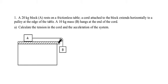A 20 kilogram block A rests on a frictionless table. A cord attached to the block extends horizontally to a pulley at the edge of the table. A 10 kilogram mass B hangs at the end of this cord. We want to calculate the tension in the cord and the acceleration of the system when it's released.